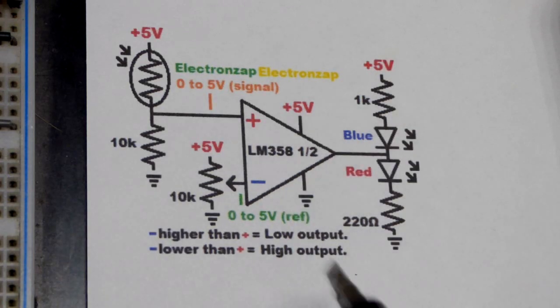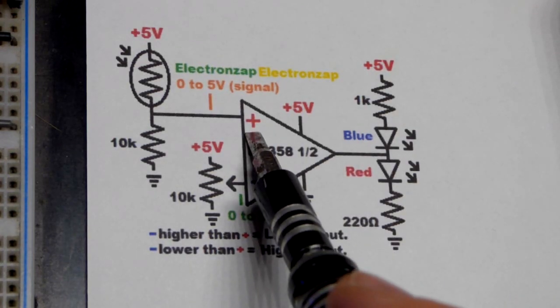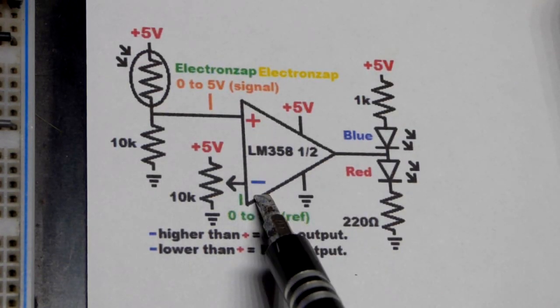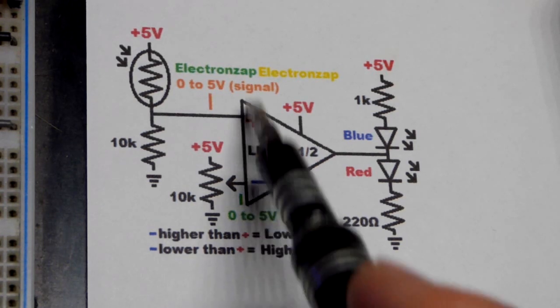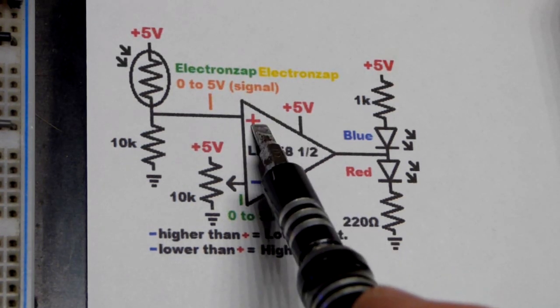And now we'll zoom in on the schematic here. So the non-inverting input is above the inverting input on the physical component. It's in the opposite order. Remember that.